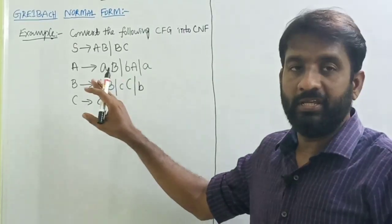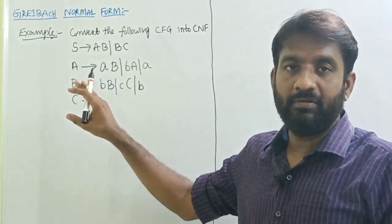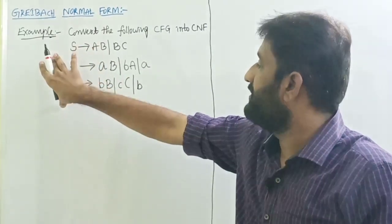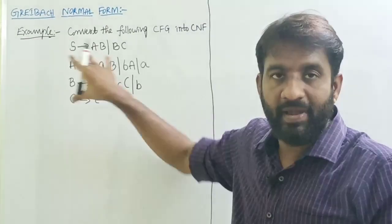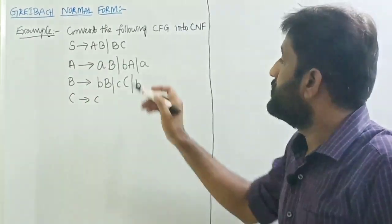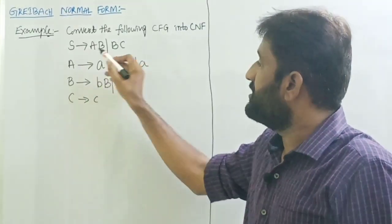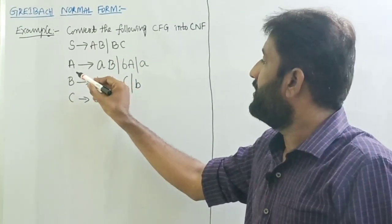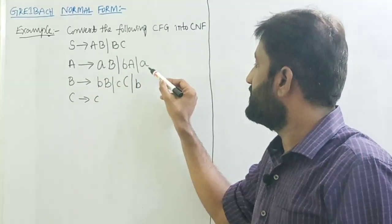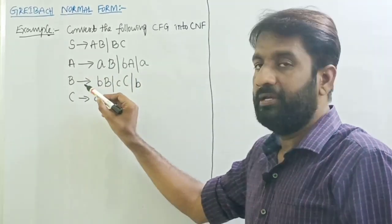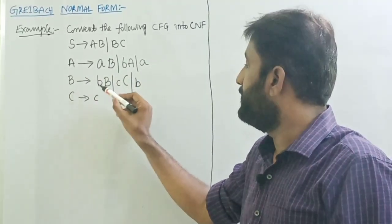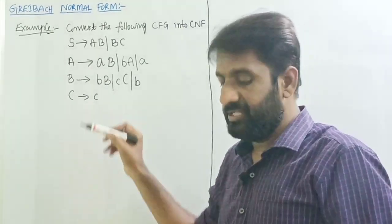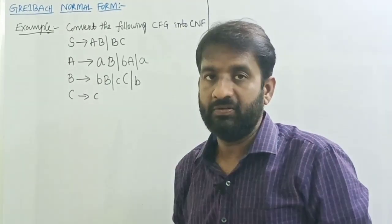Welcome back. This is the given grammar. The question is to convert this given grammar into the Greibach Normal Form. The grammar is: S tends to AB slash BC, A tends to AB slash BA slash AB, B tends to BB slash CC slash BC, C tends to small c.